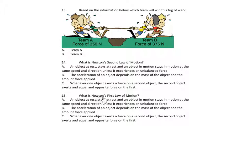Number 15. What is Newton's first law of motion? A. An object at rest stays at rest, and an object in motion stays in motion at the same speed and direction unless it experiences an unbalanced force. B. The acceleration of an object depends on the mass of the object and the amount of force applied. C. Whenever one object exerts a force on a second object, the second object exerts an equal and opposite force on the first.